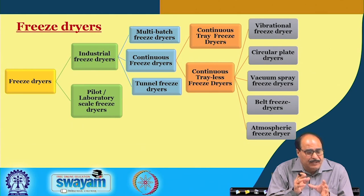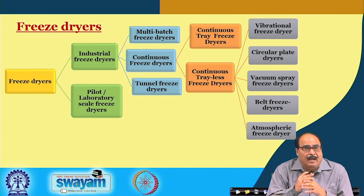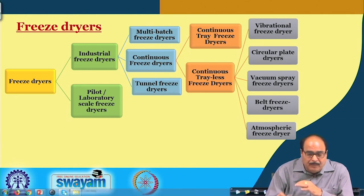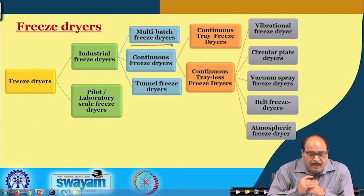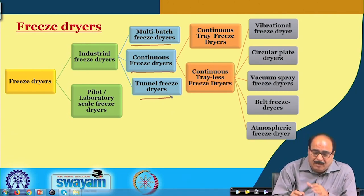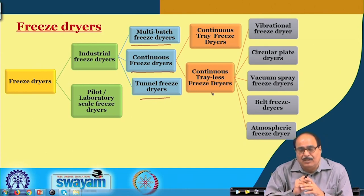In this slide you can see the freeze dryers. Freeze drying systems may be a pilot or laboratory scale, and systems are also available for industrial and large scale freeze drying. The industrial or large scale freeze dryers may be of multi-batch type, continuous freeze dryer, or tunnel freeze dryers. The continuous freeze dryers can be classified into two groups: continuous tray freeze dryer or continuous trayless freeze dryer.